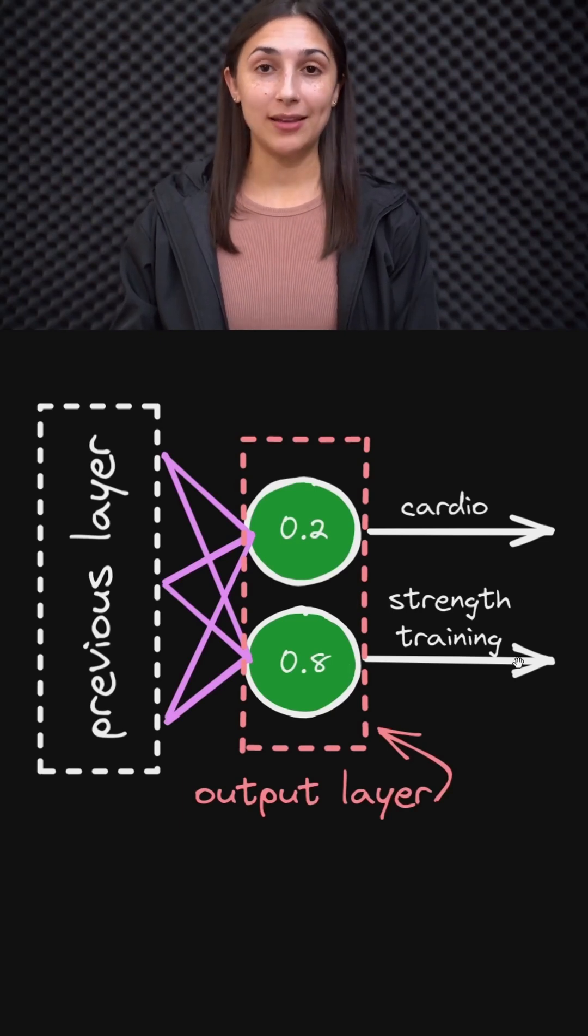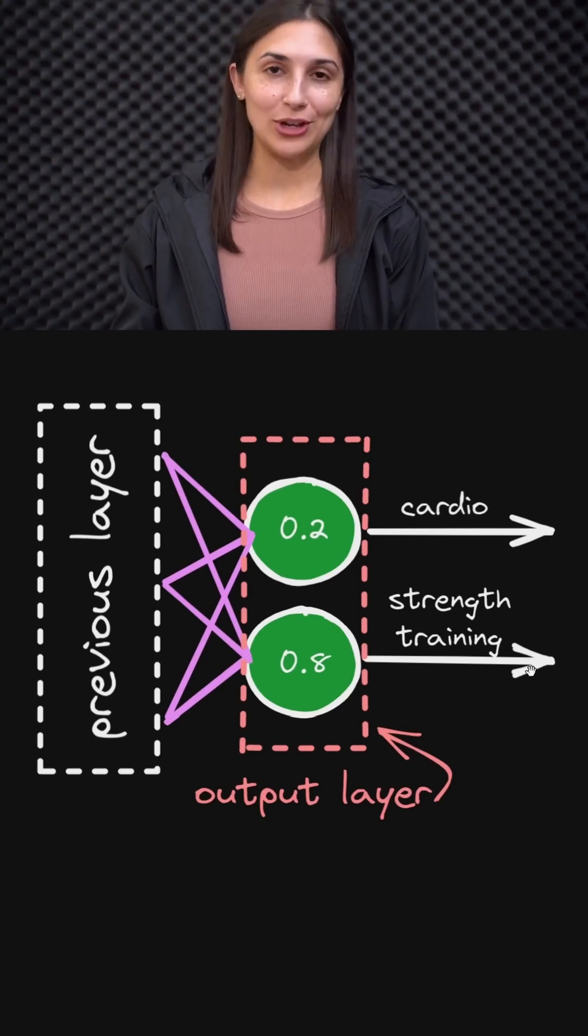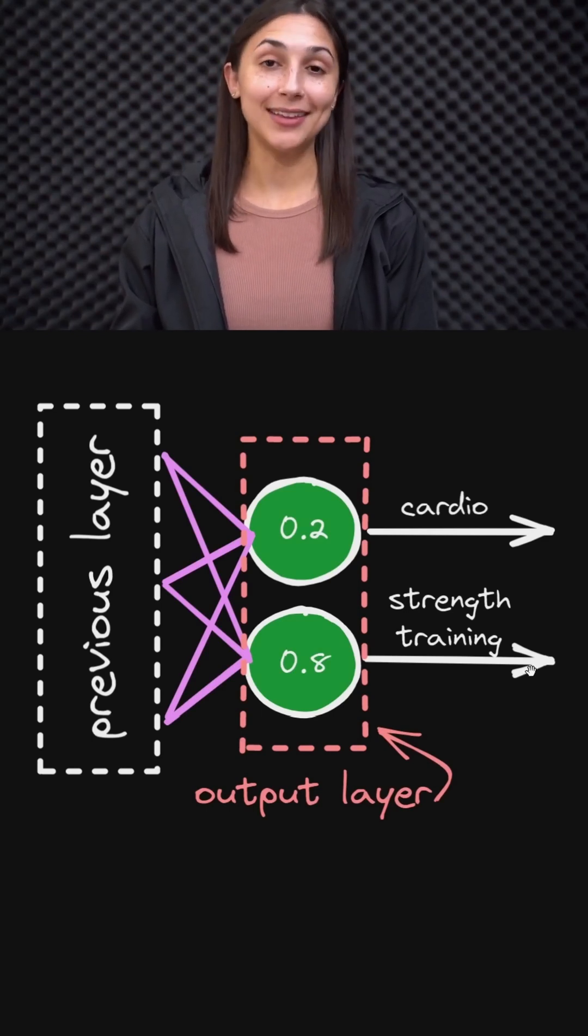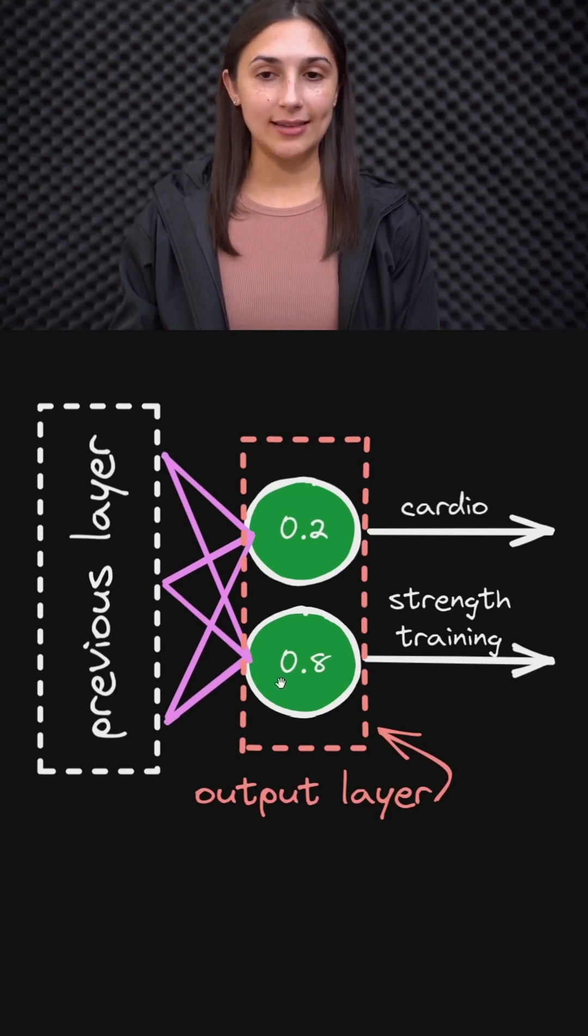So for each input, we pass someone's height and weight, and then the network is going to say whether or not that individual is better suited for cardio or strength training. And of course, this is just a silly example, there's a lot more that would go into it other than that. And so we see these example values here in our output layer, which are 0.2 and 0.8.